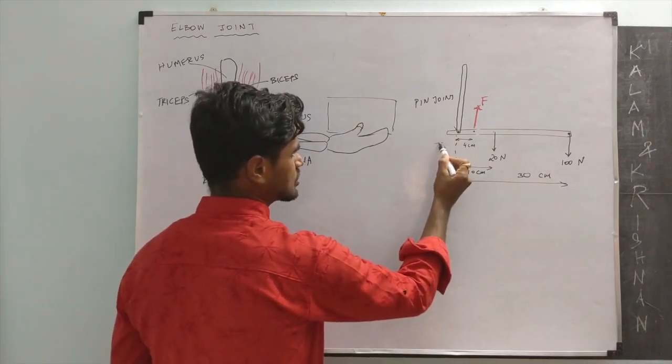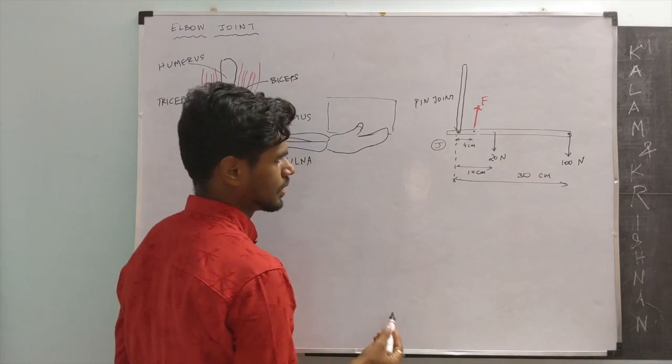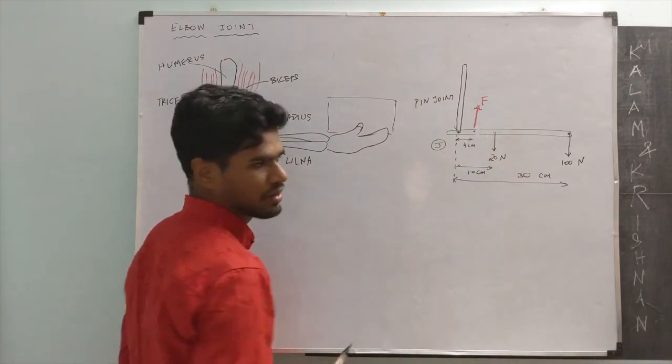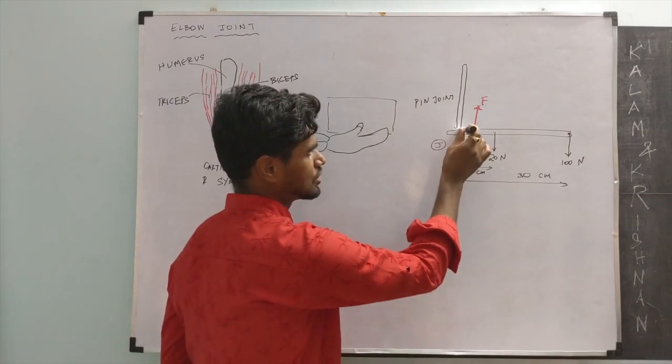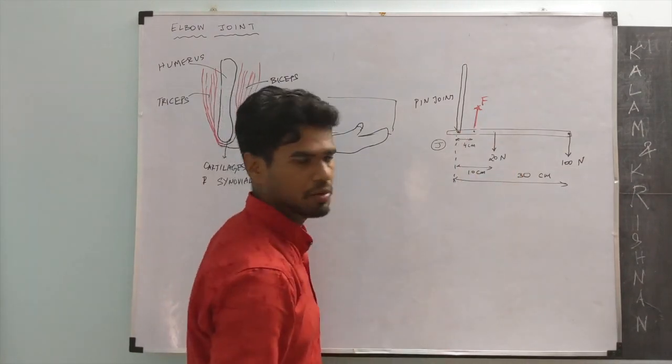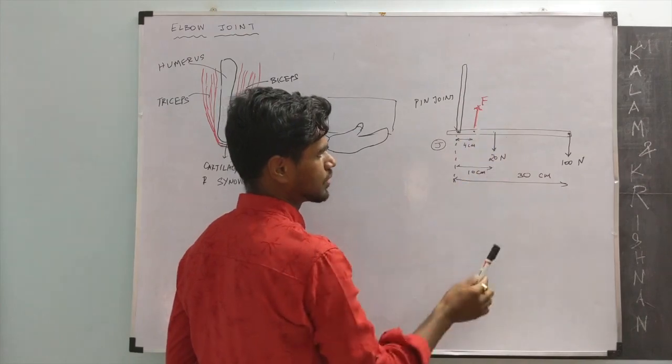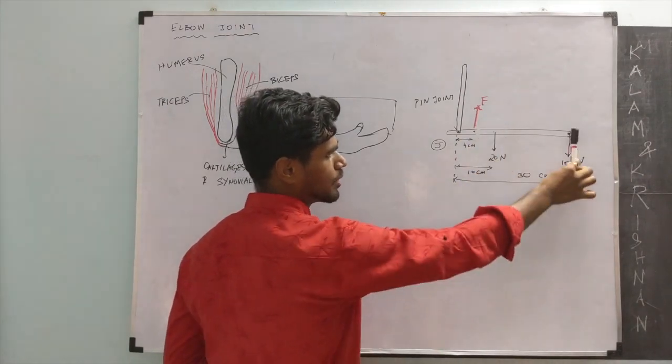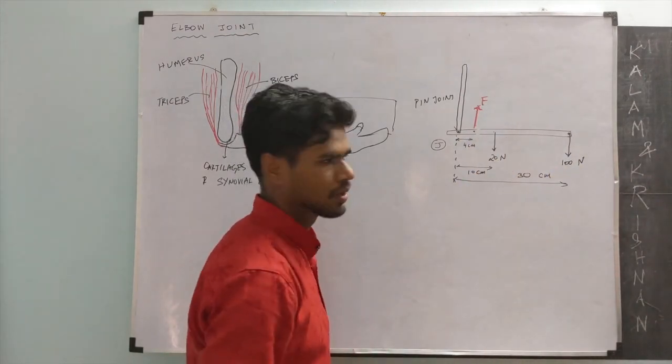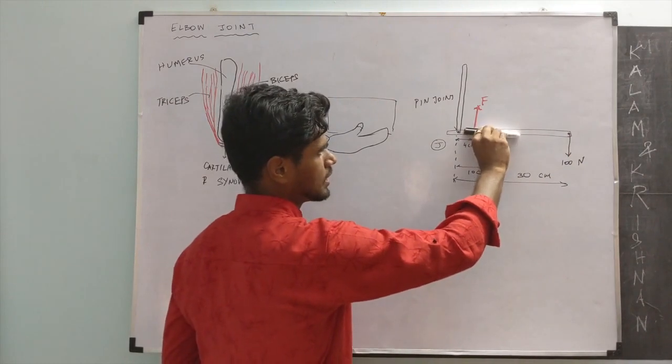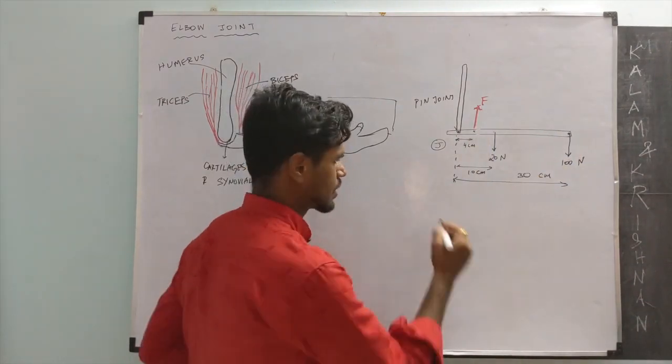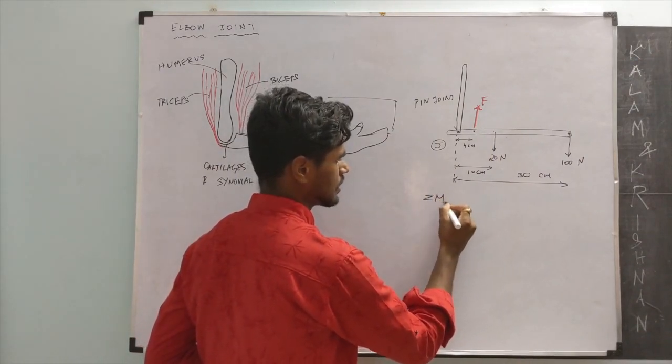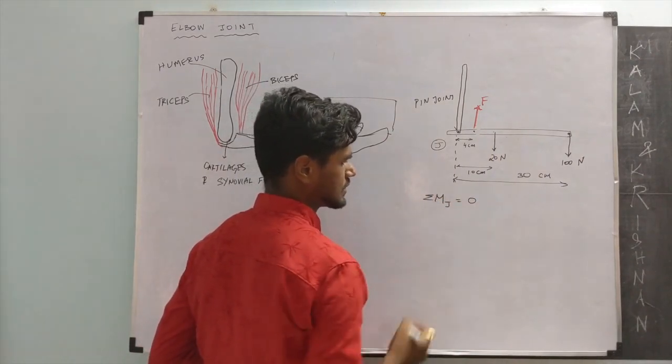I am going to name this joint as J. In order to find the force F, we essentially notice above point J there are three moments acting: moment due to the muscle, moment due to the weight of the hand, moment due to the weight of the book. In order for this part to be in equilibrium, the moments should cancel each other. So we are going to write the equations of moment equilibrium. Moment above point J is 0.